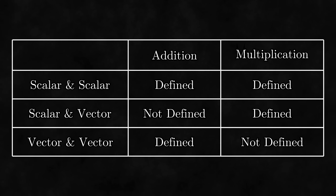At this point, you might wonder what else there is to study about vectors. However, remember that we still haven't defined a couple of operations, namely multiplying vectors with each other and adding scalars and vectors. While multiplying vectors will have to wait until chapter 3, we will finally learn how to add scalars and vectors in the next video.